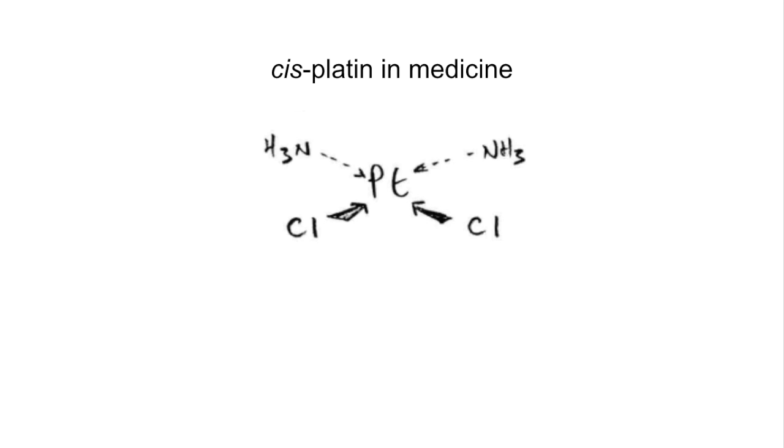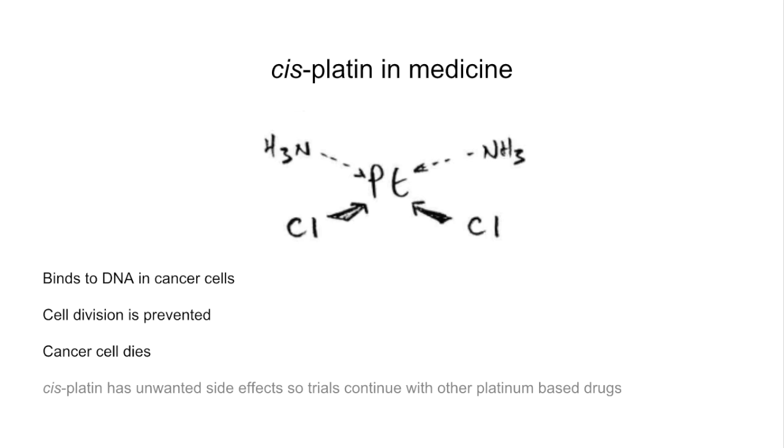Finally, we're going to look at cisplatin in medicine. Cisplatin is used as an anti-cancer drug. There's the structure again. So how does it work? It binds to the DNA of cancer cells and prevents cell division. And ultimately, the cancer cell, because it can't divide, would start to die off. Cisplatin is obviously a vital medicine, but it has unwanted side effects. So trials are continuing with other platinum-based drugs to try and develop one with fewer unwanted side effects.